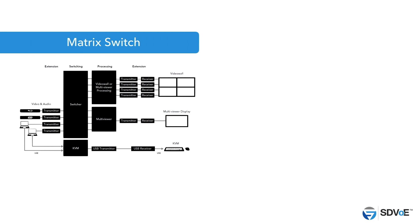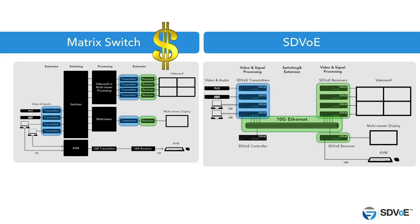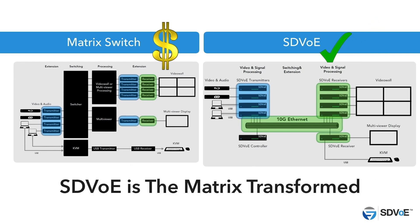So unlike a matrix switch which can only accept a limited amount of endpoints, an SDVoE system can accept as many as the highly scalable ethernet network can support. The pro-AV industry doesn't need to spend millions of pounds finding more bandwidth for the future because our networking allies are taking care of that for us, meaning we can focus on making SDVoE technology drive the future of video distribution and cement its place in pro-AV as the matrix transformed.